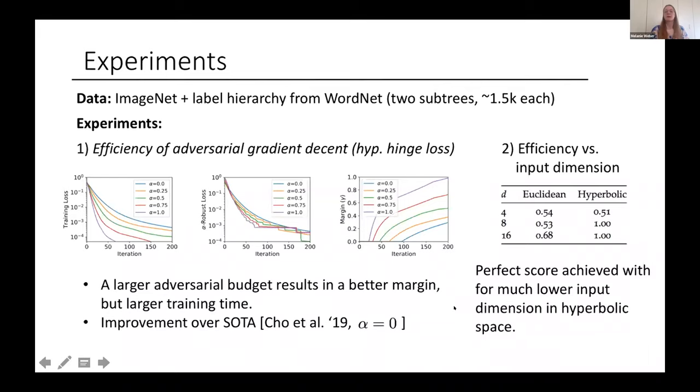In a second experiment, we test our hyperbolic perceptron. We embed a data set which has 3000 data points. It's like two sub trees of a WordNet label hierarchy. So it should be separable in an appropriate embedding dimension. We embed the data set into different dimensional Euclidean as well as hyperbolic space, and then see in what dimension the Euclidean perceptron or our hyperbolic perceptron would achieve a perfect score, which means it achieves a perfect score whenever it is able to learn a separating hyperplane. So this would correspond to the data being separable in that space.